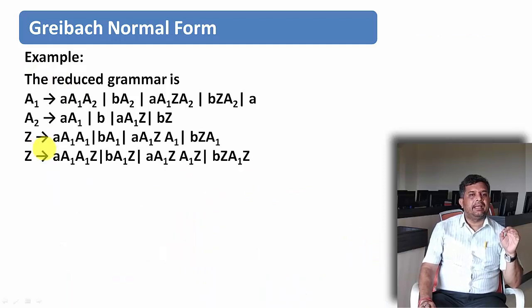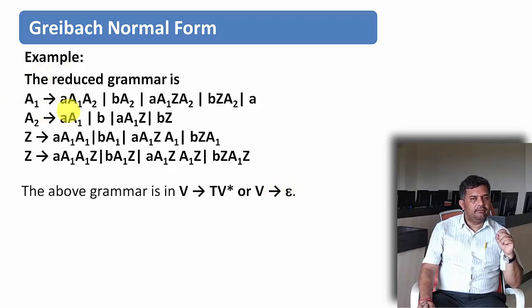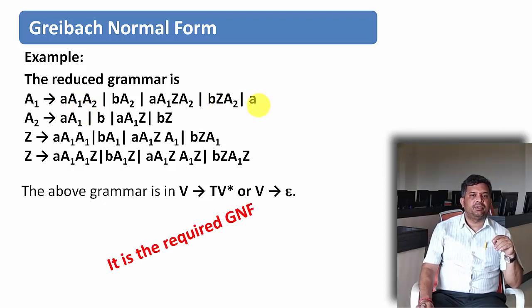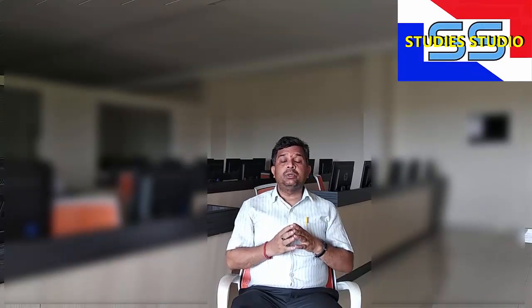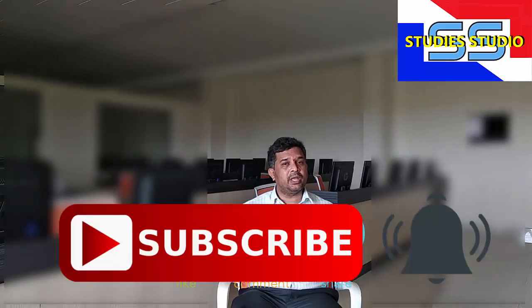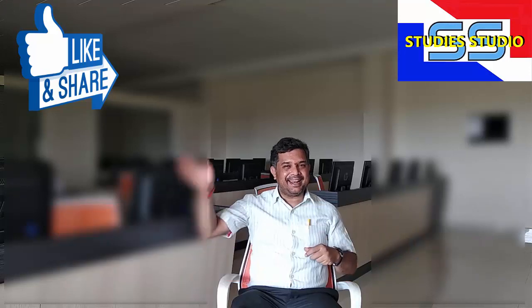We now have the complete grammar where all productions are in the form V derives t·V* or V derives epsilon — the first symbol on the right-hand side is always a terminal, optionally followed by any number of variables. This is the required Greibach Normal Form. I hope you understood how to convert to Greibach Normal Form. In our next video we are going to see yet another example of GNF. See you then. Take care. Bye.